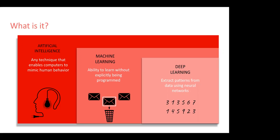Deep learning is a subset of machine learning which takes this idea one step further and tries to extract patterns automatically from raw data that has been fed without any human intervention to annotate the rules which the system needs to learn.